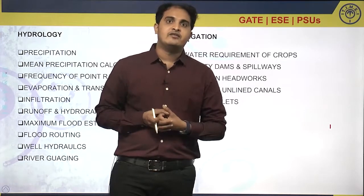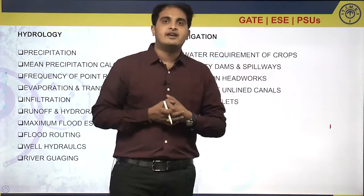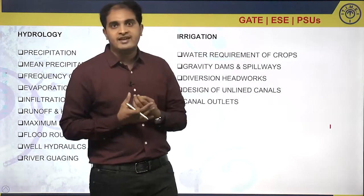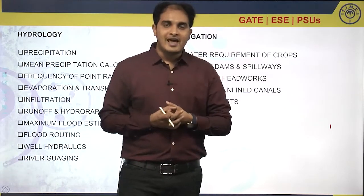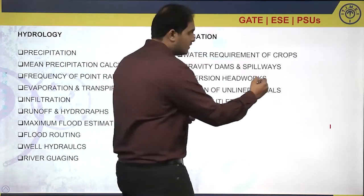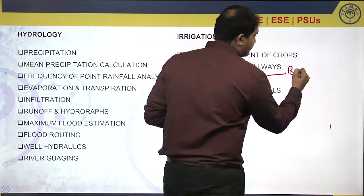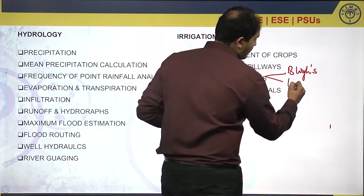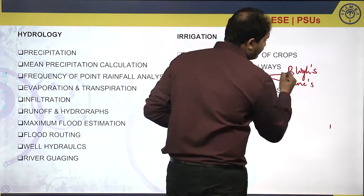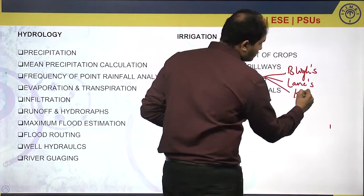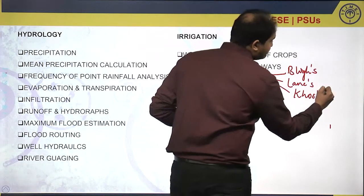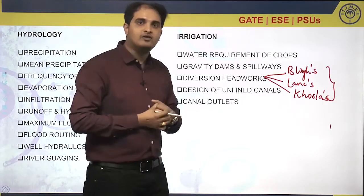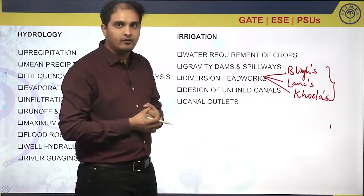Out of all the diversion headworks, weirs are the most important, especially from GATE and ESE examination points of view. We have three important theories for the design of weirs: Bligh's theory, Lane's weighted creep theory, and Khosla's theory. These three theories are very important from both the GATE and ESE examination points of view.